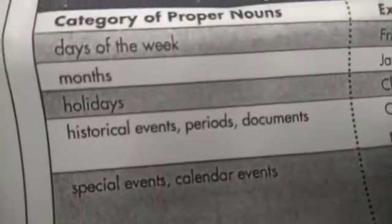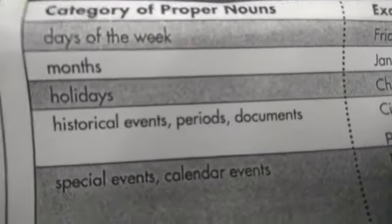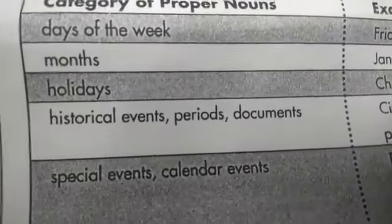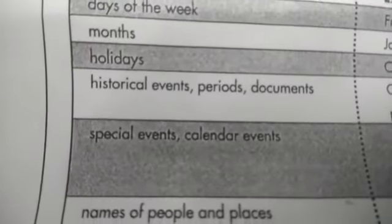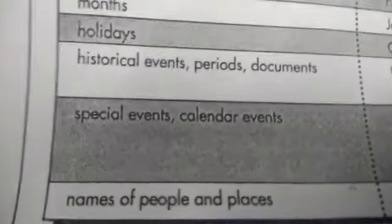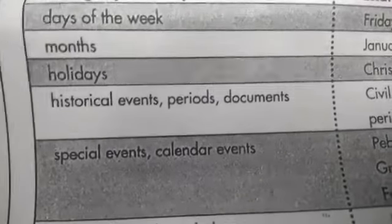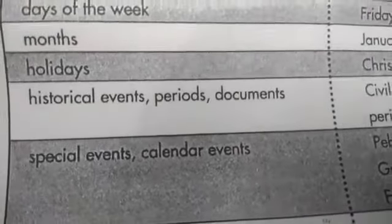In the second class, we worked on proper nouns — the categories of proper nouns that need to be capitalized: days of the week, months, holidays, historical events, periods, documents, special calendar events, and names of people and places. We discussed these with examples in the first two classes. That was a quick recap of the previous two sessions.